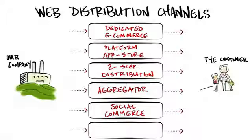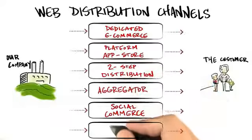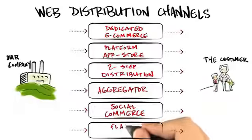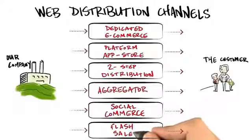Another option might be social commerce. Social commerce sites for distribution might include Facebook, Twitter, etc. Zynga, which is a video game company, uses predominantly Facebook as its platform. And then finally, flash sales — examples include Groupon and LivingSocial.